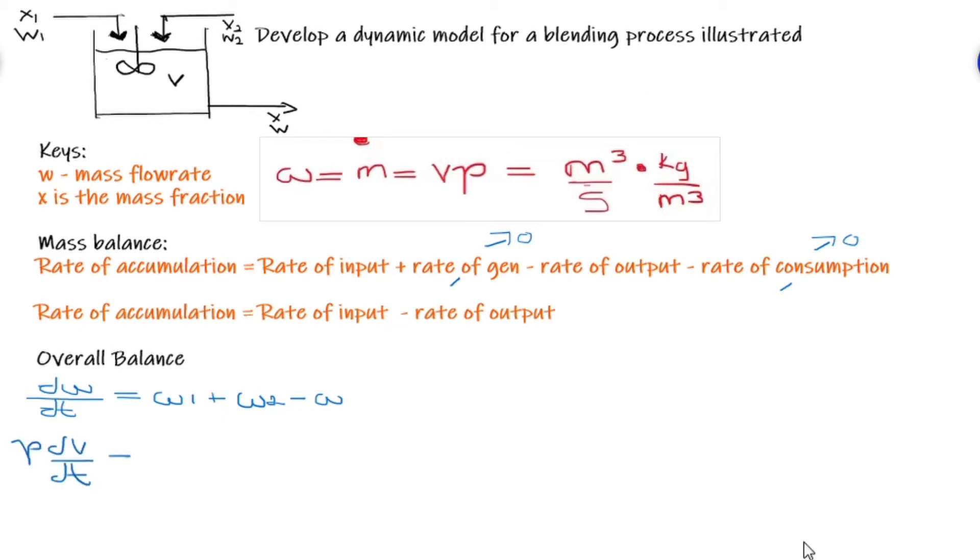Also, note that W is our mass flow rate which can also be equated to the volume multiplied by density, in this case volumetric flow rate.